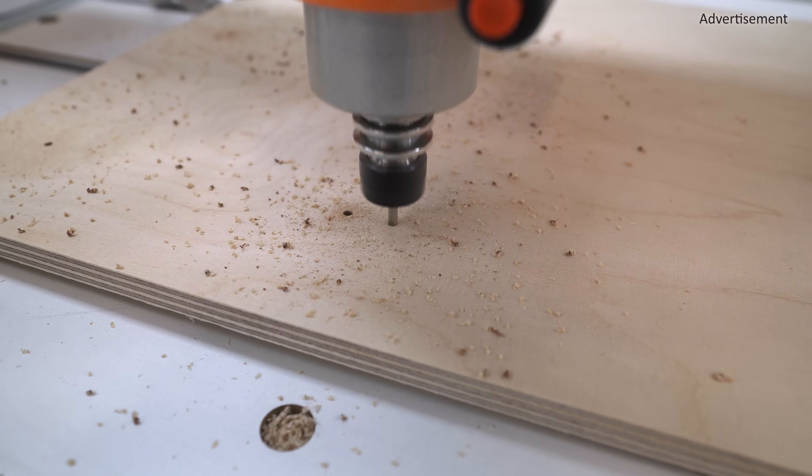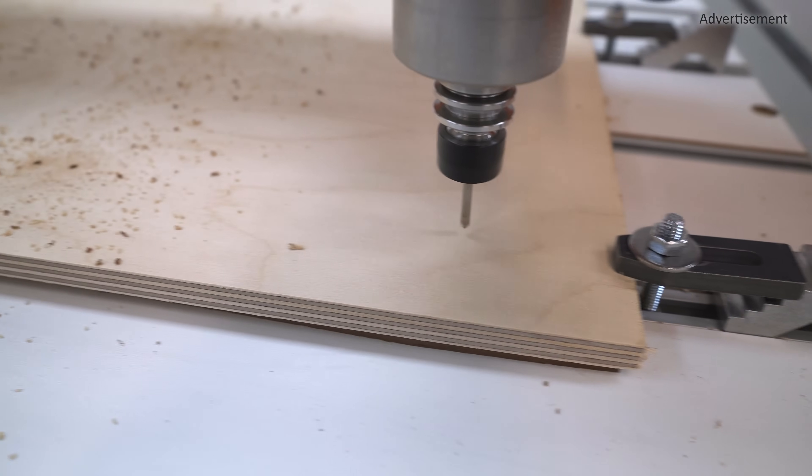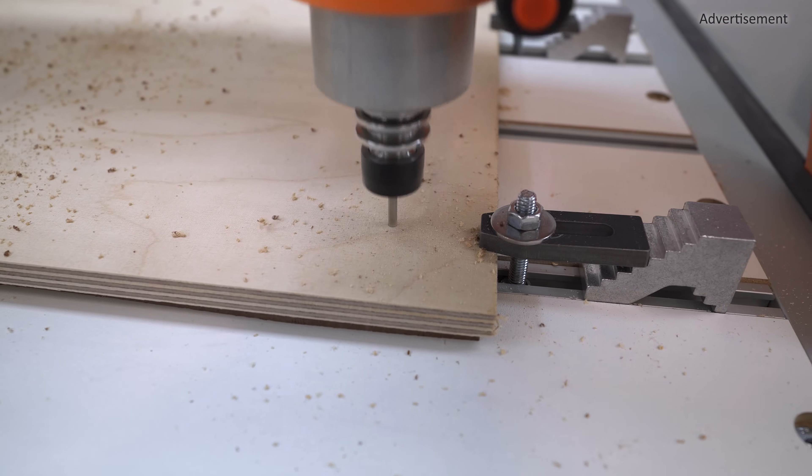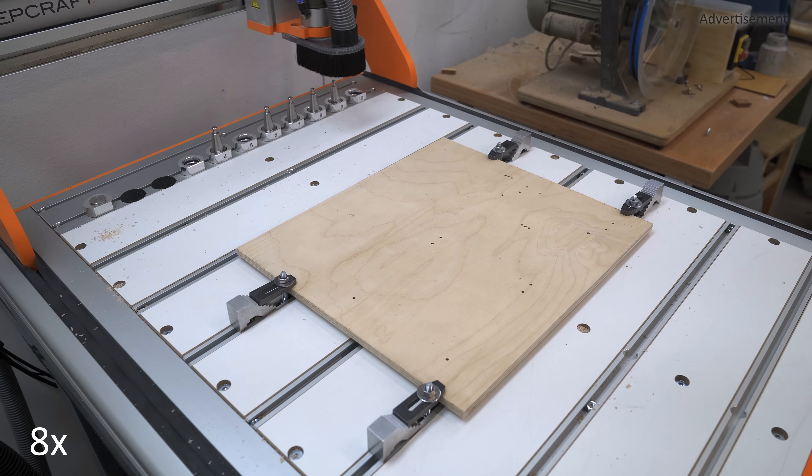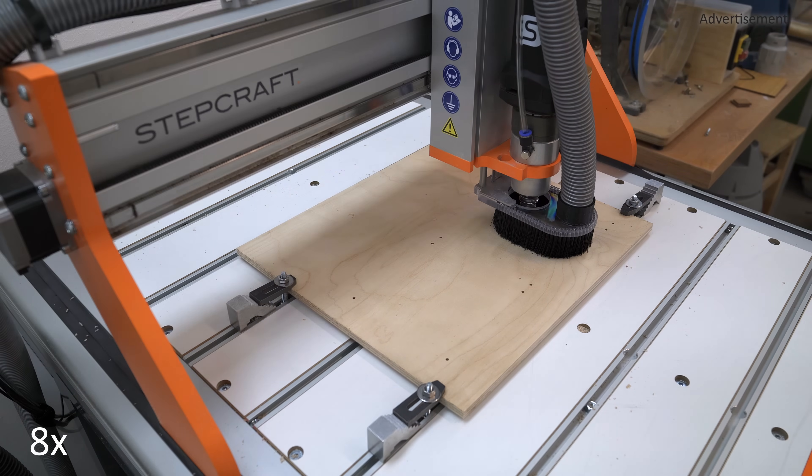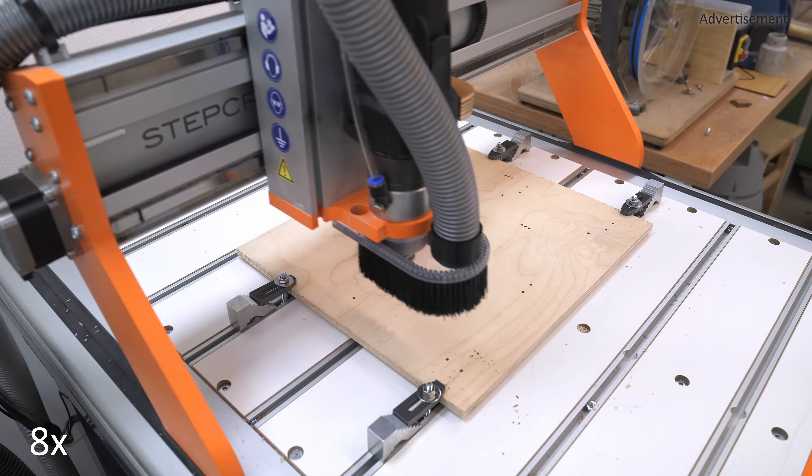So first drilling the holes for some alignment pins which will make the later assembly a lot easier. And now using an end mill to drill two slightly bigger holes in preparation for milling the threads for mounting the actuator.